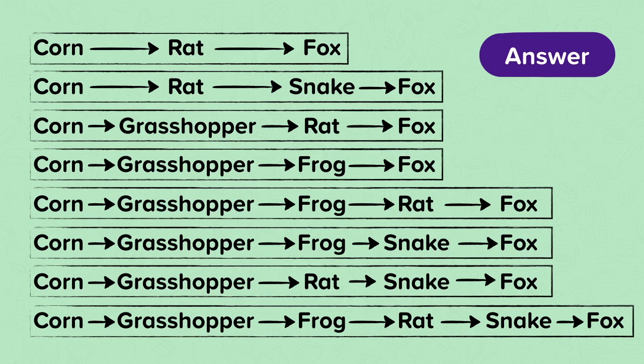You will notice that most of the food chains only have a few links. The longest food chains normally only contain about five organisms. This is due to the energy being lost at each level.